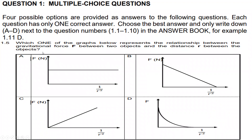Question 1.5 asks about the graph between force and 1 over r squared for Newton's law of universal gravitation. The formula is F equals G times m1 times m2 over r squared. You can rewrite this as F equals k times (1/r²), where k represents G times m1 times m2 — all constant. This is just like k times x in maths, so F is directly proportional to 1/r². Answer is C. That is all for today.